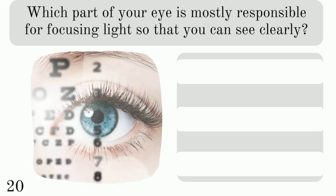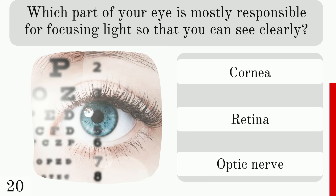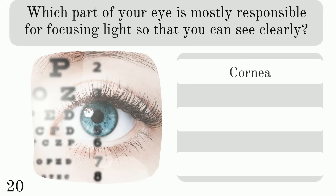Which part of your eye is mostly responsible for focusing light so that you can see clearly: the cornea, retina, or optic nerve? The answer is the cornea.